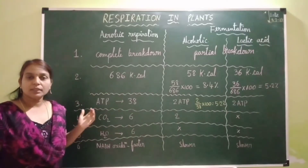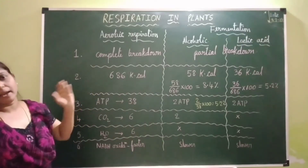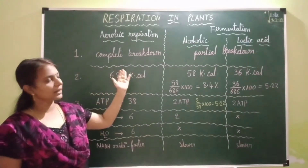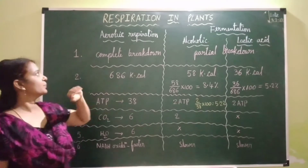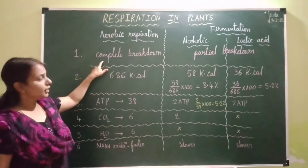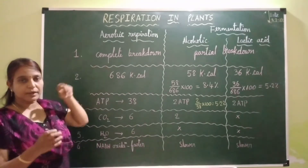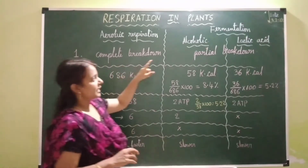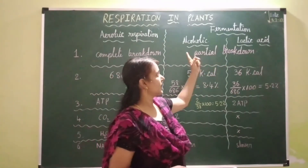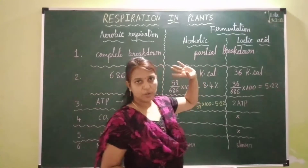In this video I want to give the differences between aerobic and anaerobic respiration, that is fermentation. Fermentation includes alcoholic and lactic acid fermentation. During aerobic respiration, complete breakdown of glucose occurs, whereas in anaerobic respiration — that is in fermentation, either alcoholic or lactic acid — only partial breakdown of food occurs.